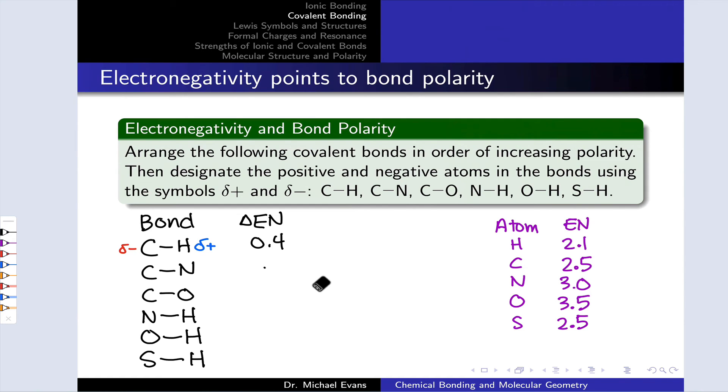So for example, for the C-H bond, the difference in electronegativity is 0.4, 2.5 minus 2.1, with carbon more electronegative than hydrogen. So carbon is partially negative, hydrogen partially positive.